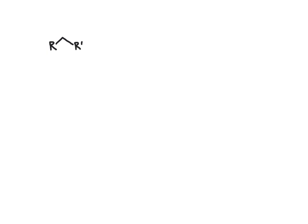We'll start with an aldehyde or ketone starting material, which I'm going to abbreviate by using R groups, where R and R prime are defined as either hydrogens or carbon. That's what's going to allow this molecule to meet the definition of an aldehyde or ketone — we don't have any heteroatoms directly bonded here, just carbon-carbon bonds or carbon-hydrogen bonds.